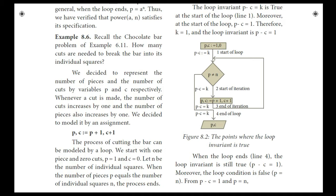If we do a second cut, the number of cuts is 2 and the number of pieces is 3. Each time one cut is made, the number of pieces increases by 1. We model this by the assignment: P, C := P + 1, C + 1.